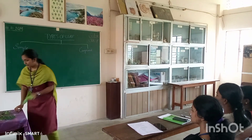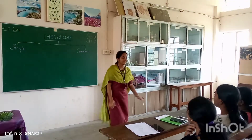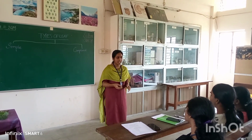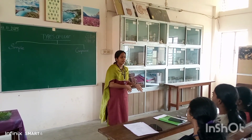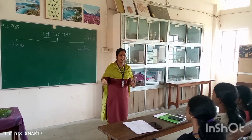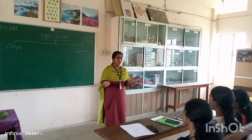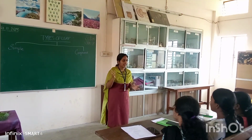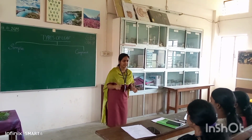Then, what about compound leaves? Compound leaves are leaves that have incisions, and these incisions go deep into the midrib. The midrib later breaks into small leaf segments called leaflets. These are called compound leaves.